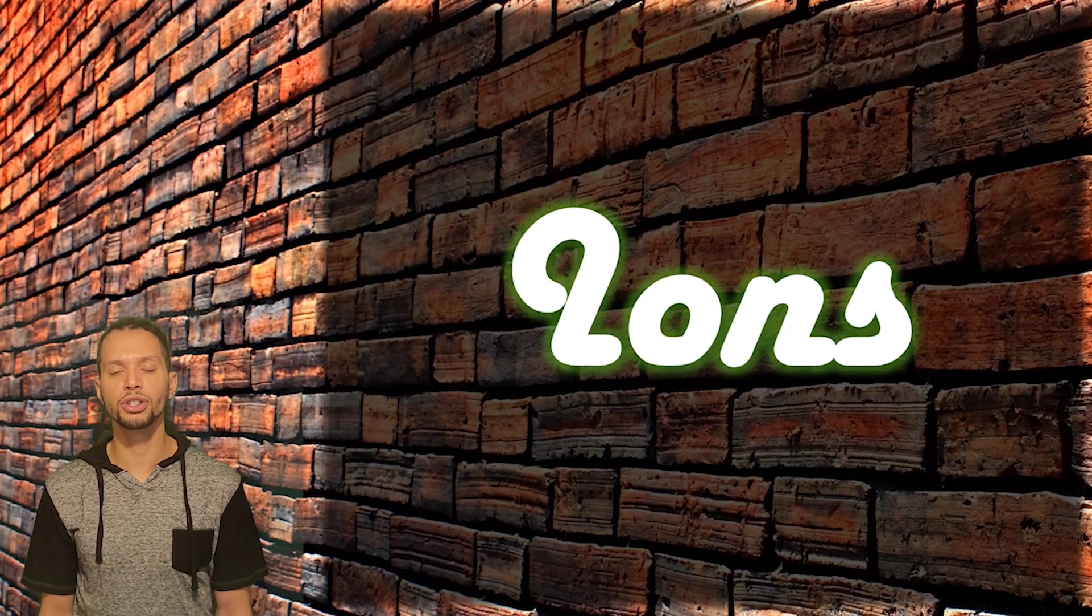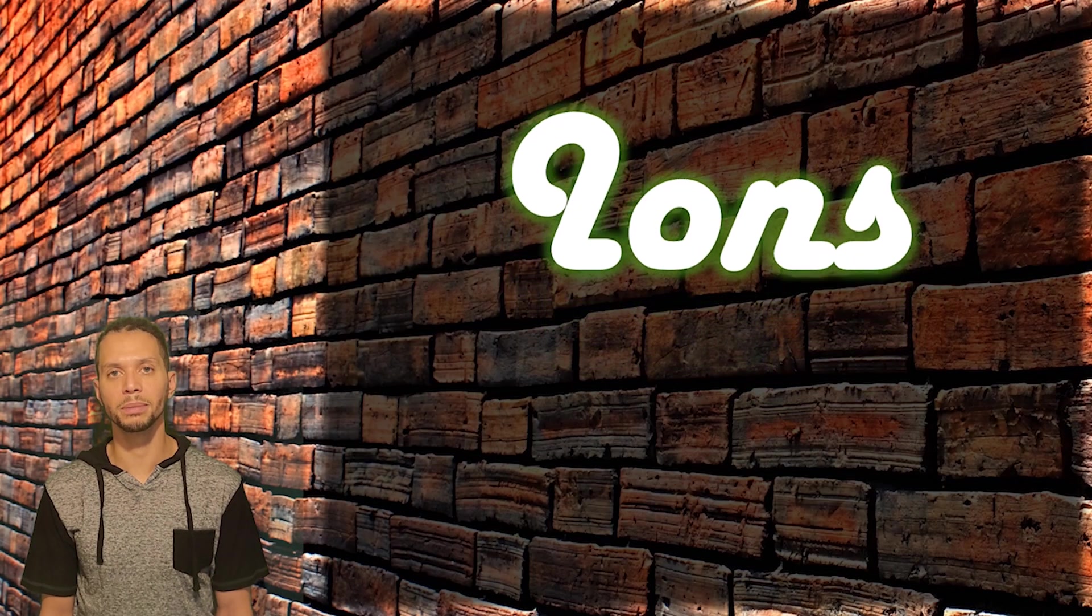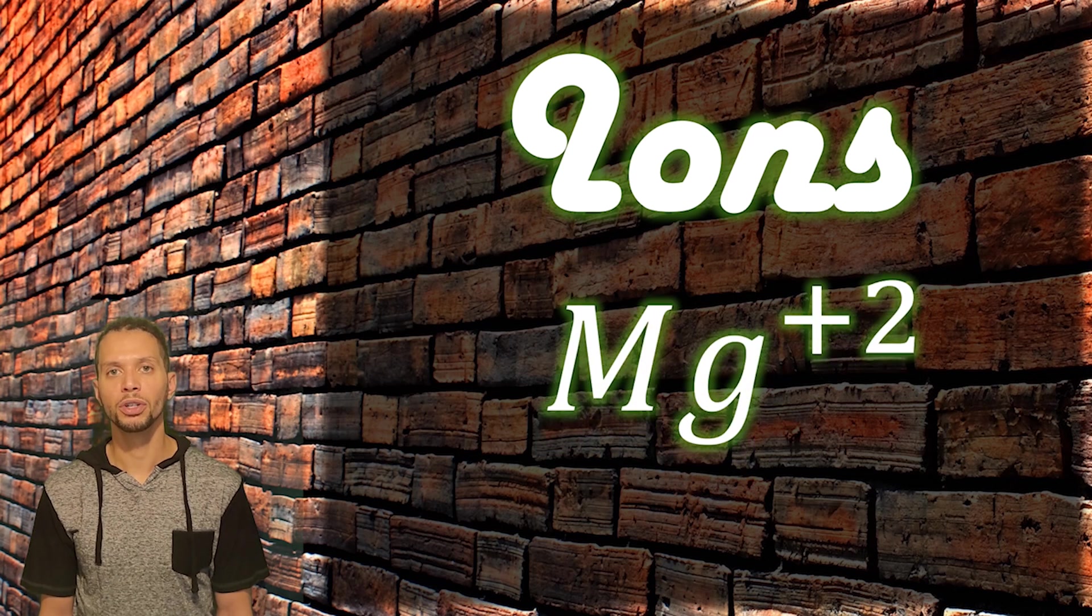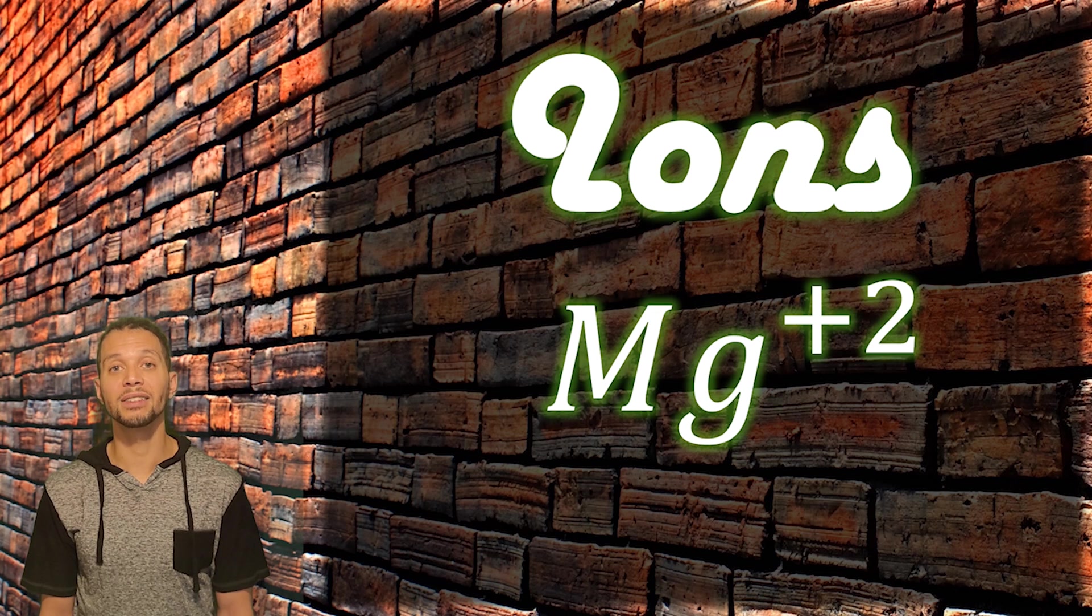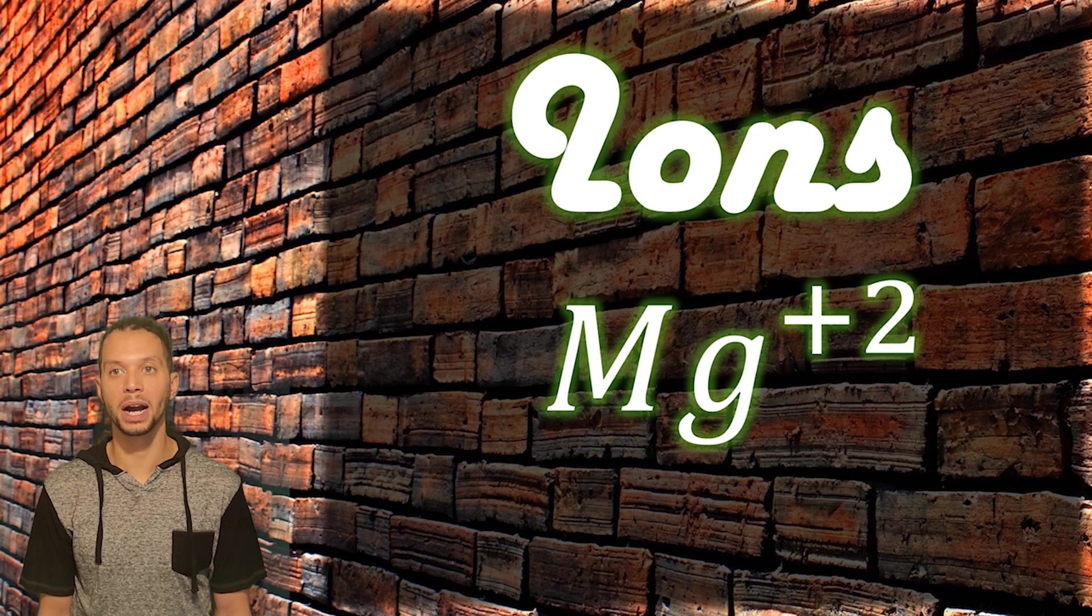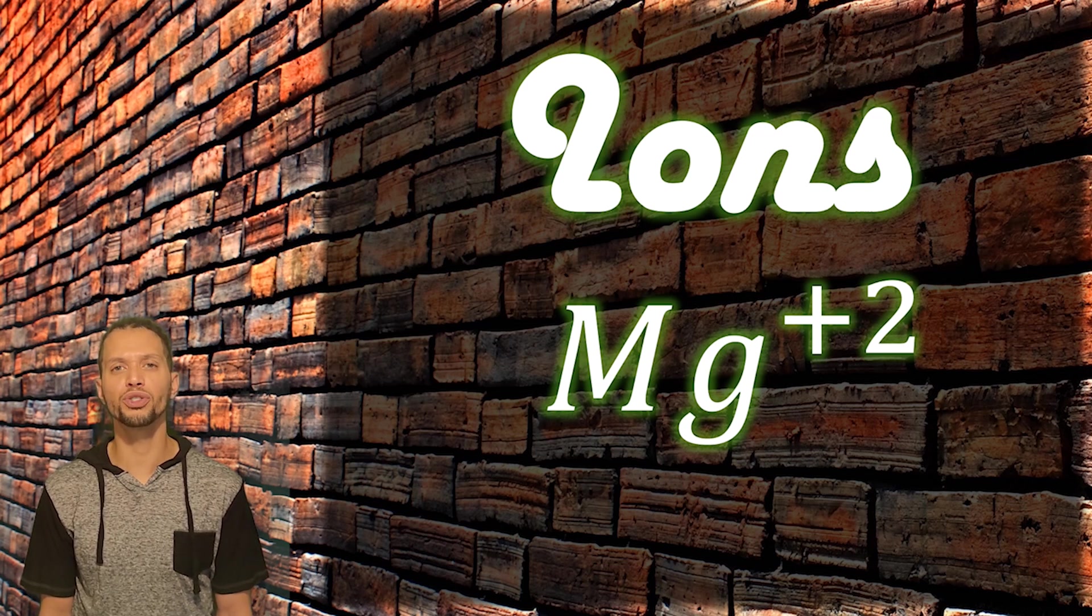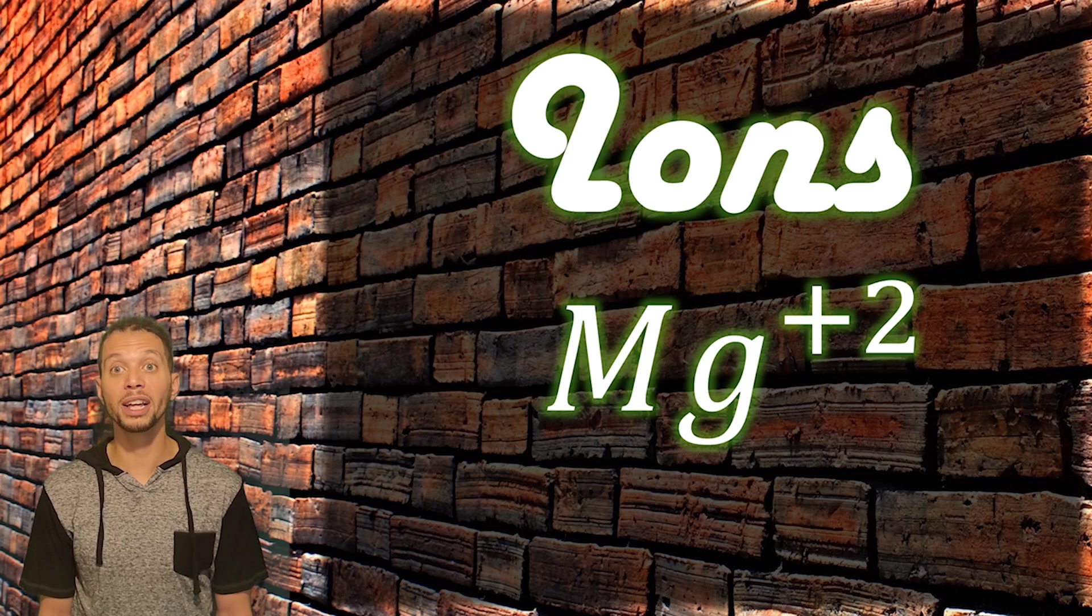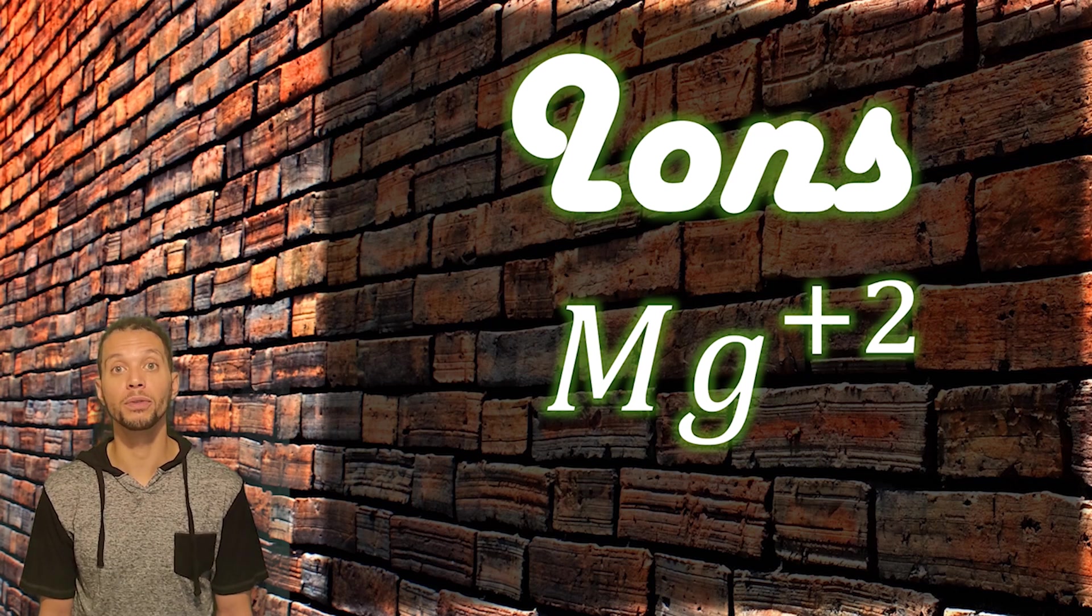Ions are represented using the chemical symbol of that element and a superscript on the top right side of the symbol with the sign and magnitude of the ion's electrical charge. In this example, we have the magnesium ion, which carries an electrical charge of plus two because it is missing two electrons compared to its stable form.